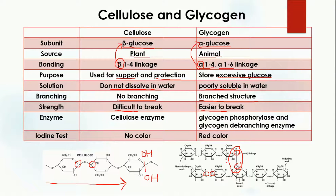Cellulose is difficult to break, while glycogen is easier to break, because you can break it at the 1-6 linkage. To digest cellulose you need the cellulase enzyme, while to break down glycogen you need two types of enzymes: glycogen phosphorylase and glycogen debranching enzymes. With iodine, cellulose gives no color — the original iodine color is retained — while iodine turns red when it reacts with glycogen.